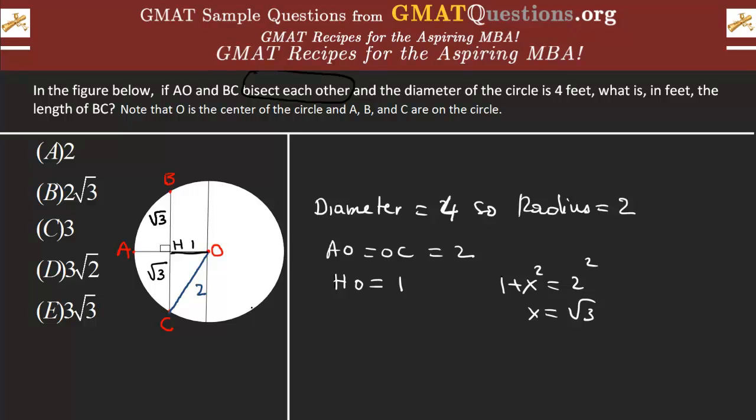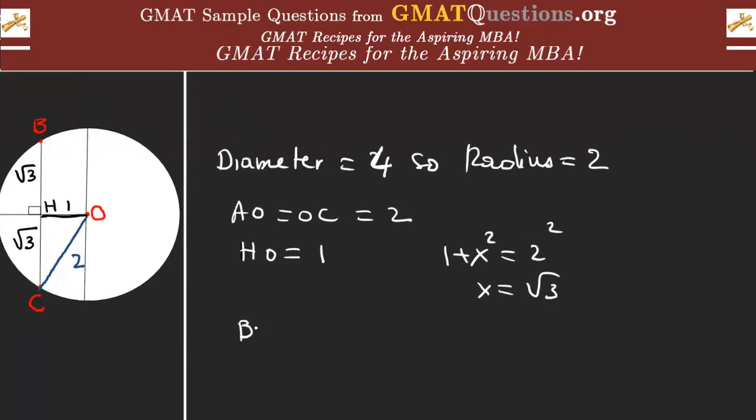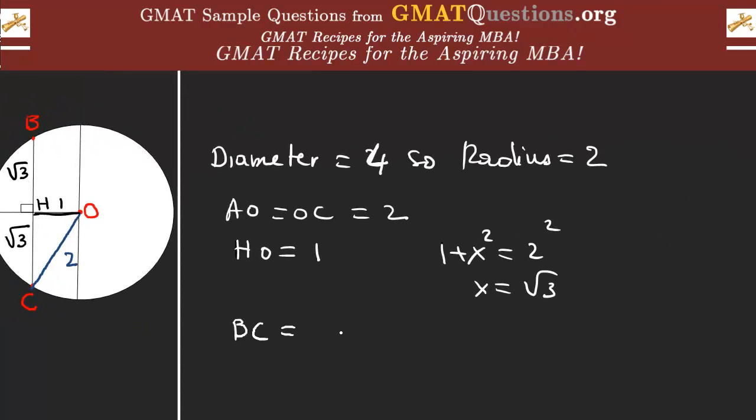It's done—we have solved the question. From what we did, we can see that BC is just the double. If you want, it's BH plus HC, so this is equal to root 3 plus root 3, and this goes to 2 root 3. B is the answer. B is the correct answer.